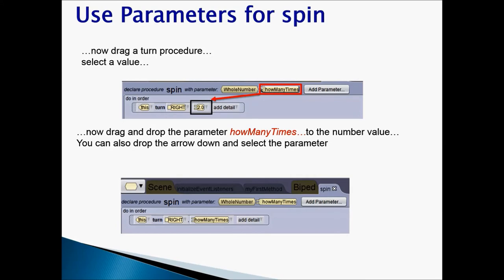So once you drag and drop how many times in place of 2, your instruction would be a general instruction, this turn right how many times. We have learned how to create general procedures. Now, we want to create more generalized procedure by adding a parameter in there. So we don't want to say turn right half a meter or turn right one meter. We'll say just turn right how many times.